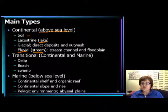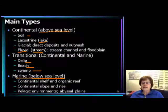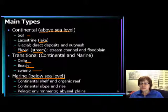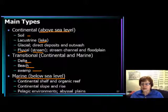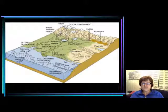The transitional environment includes the delta, beach, and swamps. Then you have the marine sedimentary environment, which is always below sea level. This is where we learn about the continental shelf, organic reef, continental slope and rise, and the pelagic or very deep water environment. This slide shows you the same environments in a drawing so you can see them all.